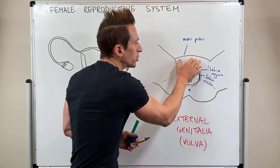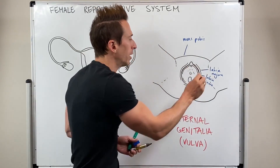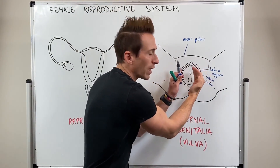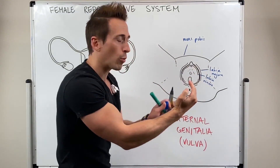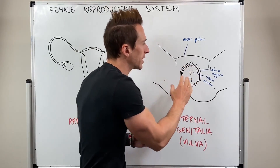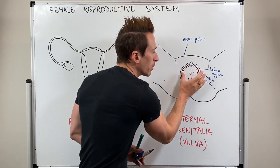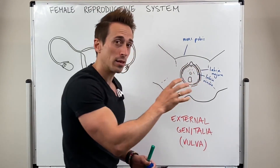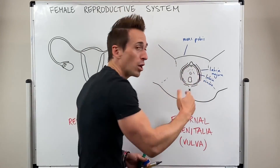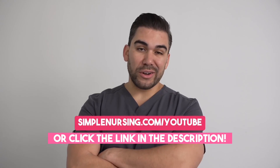What you'll find is that the mons pubis, the labia majora, labia minora, and then as we start to move in to what we call the vestibule. The vestibule is the recess that sits within the skin folds of the labia majora. And what you find with the vestibule is it contains most...